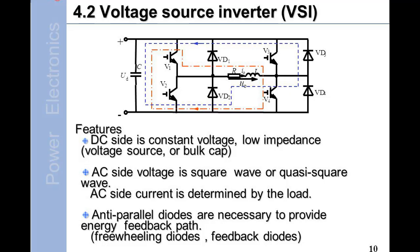Two classes of inverters: Voltage Source Inverter (VSI) and Current Source Inverter (CSI). Section 4.2: Voltage Source Inverter. Features: DC side is constant voltage, low impedance voltage source or bulk capacitor. AC side voltage is square wave or quasi-square wave. AC side current is determined by the load. Anti-parallel diodes are necessary to provide energy feedback path.